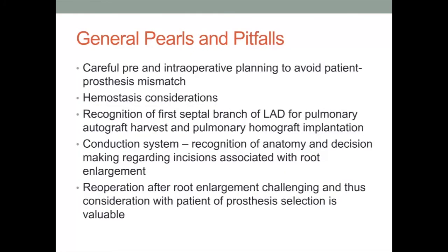As with any challenging surgical approach or technique, a mindful strategy regarding pearls and pitfalls should be recognized. Careful preoperative and intraoperative planning is essential to delineate options regarding enlargement techniques as well as to avoid patient prosthesis mismatch. This is defined as a valve with an area that is insufficient relative to the patient's body surface area. It is calculated as the effective valve orifice area divided by the body surface area. A value of less than 0.85 is thought to be indicative of patient prosthesis mismatch and is associated with LV dysfunction in both the early and late postoperative periods. Due to the extensive surgical reconstruction and associated suture lines, appropriate blood pressure management in the immediate post-procedural time as well as the potential employment of hemostatic agents should be carefully considered.